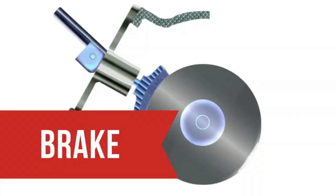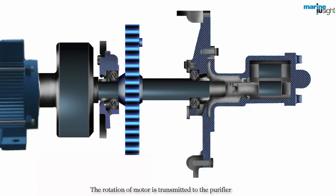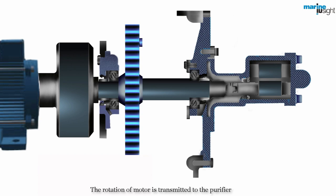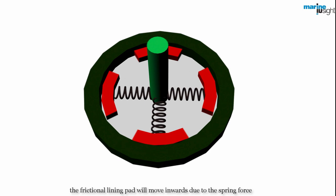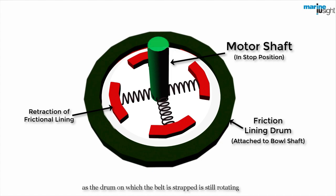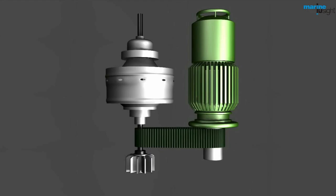The rotation of the motor is transmitted to the purifier using frictional clutches. During stopping, as the motor comes to the stop position, the frictional lining pad will move inwards because of the spring force. However, the shaft carrying the bowl will continue to rotate as the drum on which the belt is strapped is still rotating.